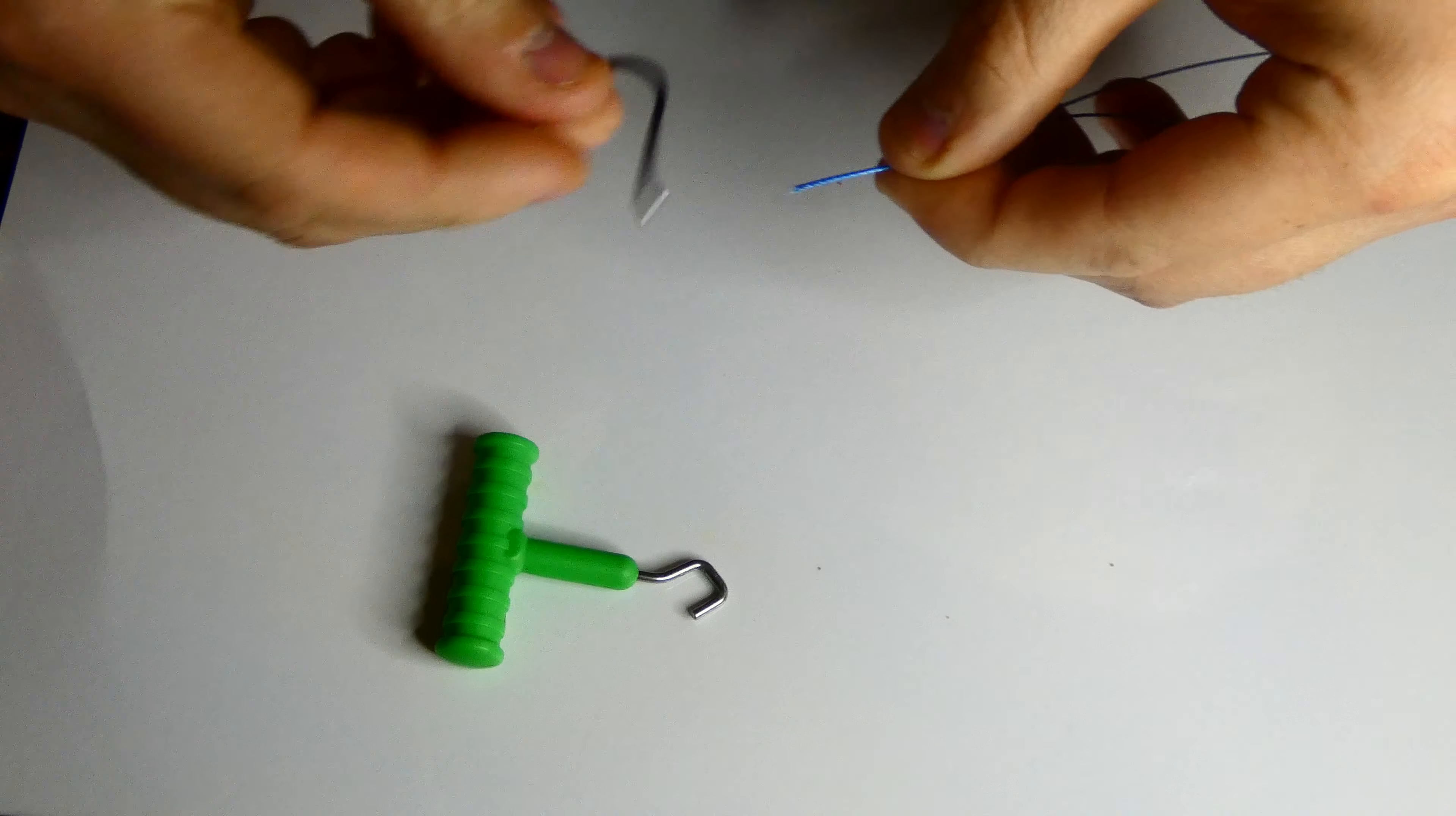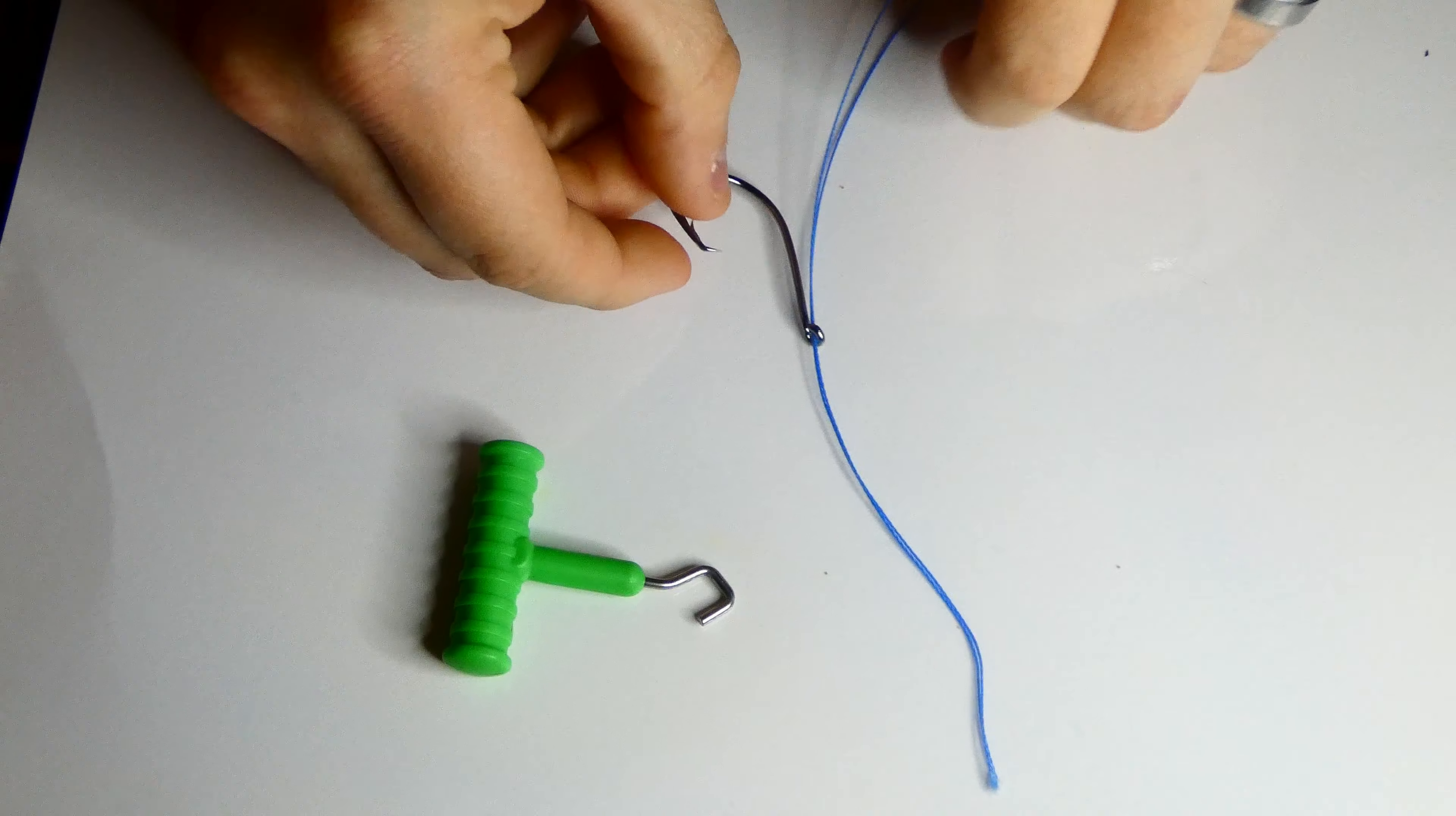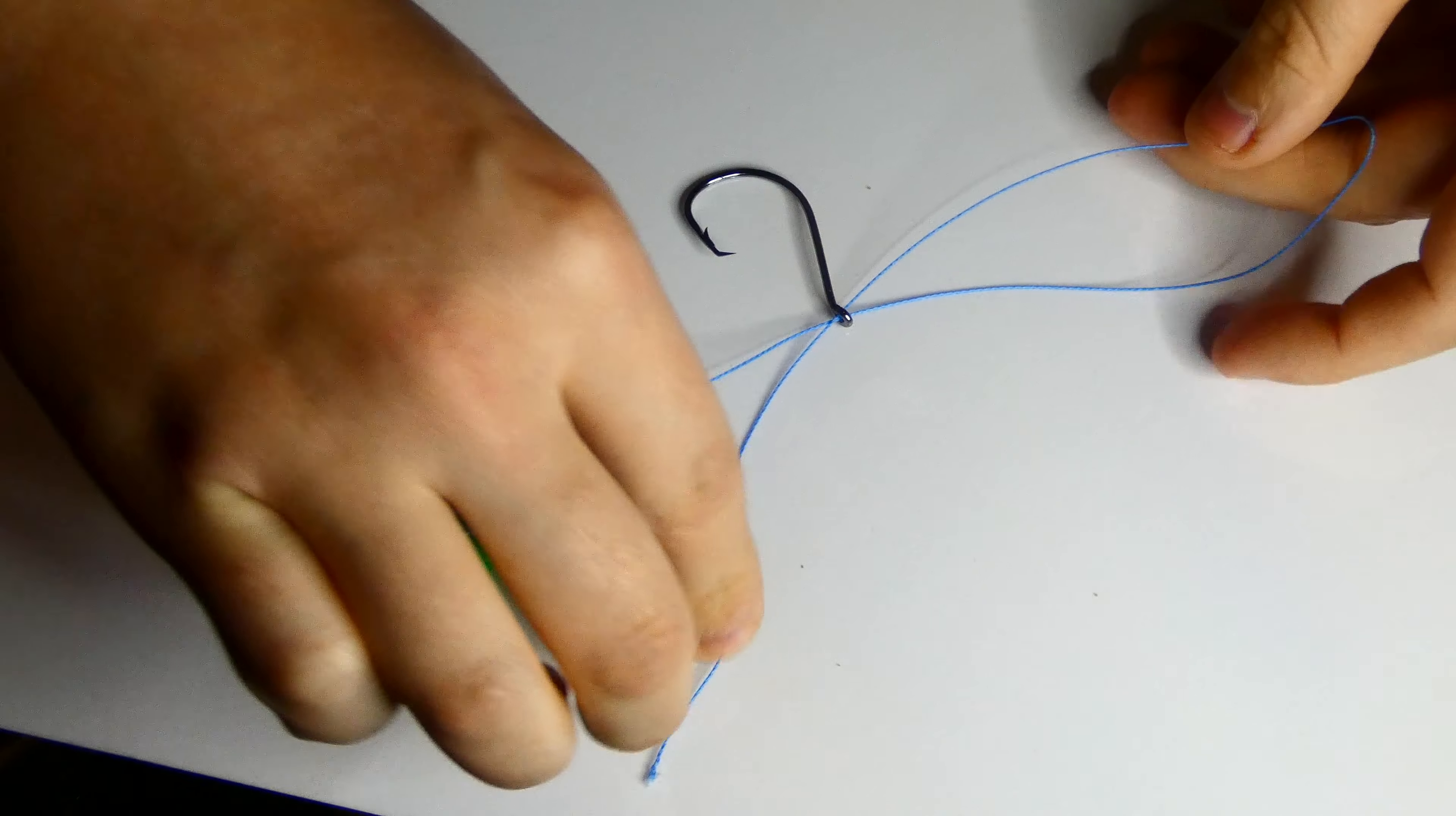Run it through the back of the hook, just like that. And then after that, tie a regular knot.